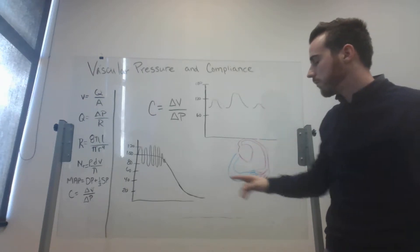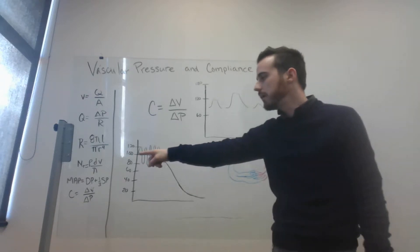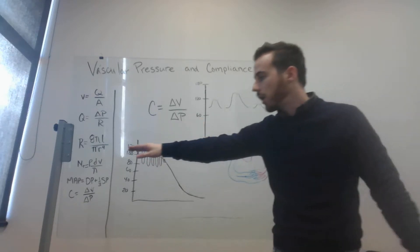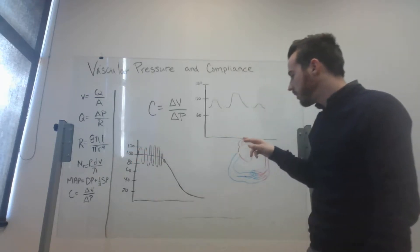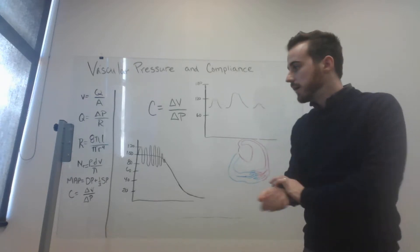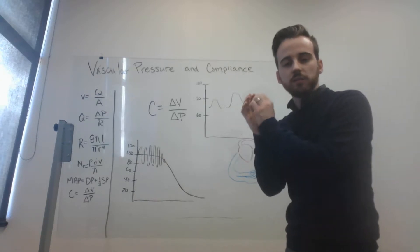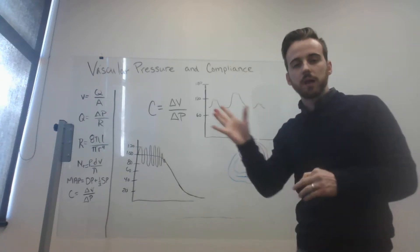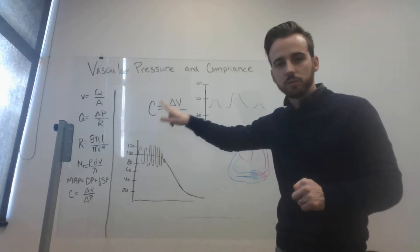Starting in our arteries, we have high pressure in our arteries. The mean pressure is about 100 millimeters of mercury. The pressure in our arteries is actually pulsatile. That's why you can feel your pulse. It goes up and down with the pulsations of blood coming out of the heart. And the reason for that actually comes back to compliance. We'll talk about that in a minute.